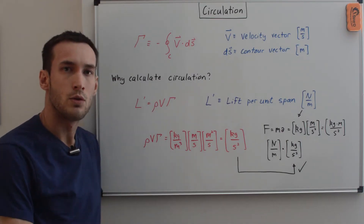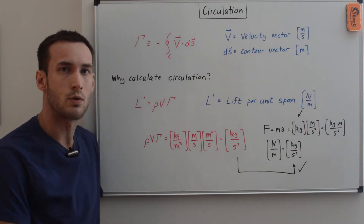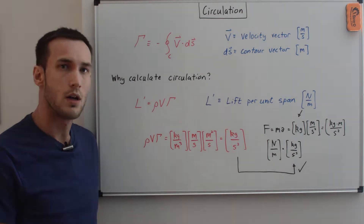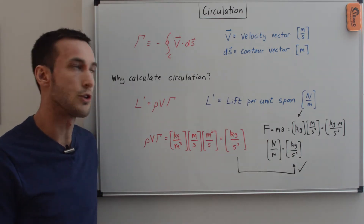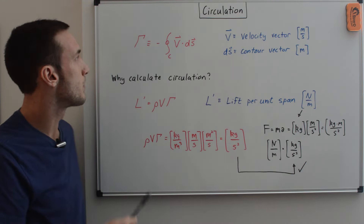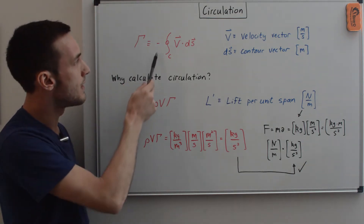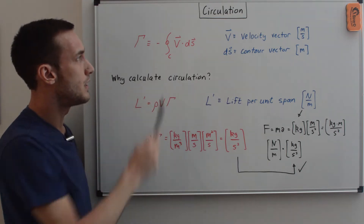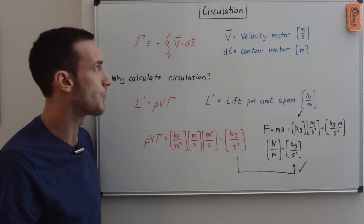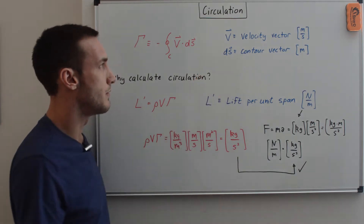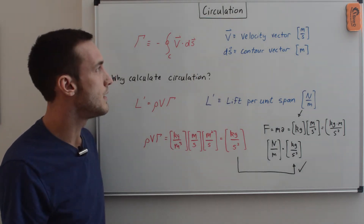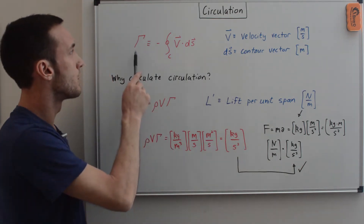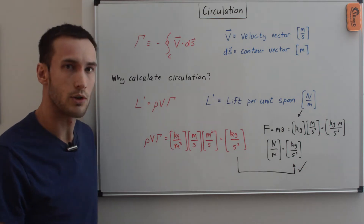In this video we're going to go through how to compute circulation, which will be used for panel method codes. In the latter part we'll go through a MATLAB and Python code. We start with the definition of circulation: capital gamma is defined as the negative of the contour integral over contour C of the velocity vector dotted with the contour vector. V is the velocity vector in meters per second, DS is the contour vector in meters, so circulation has units of meters squared per second.